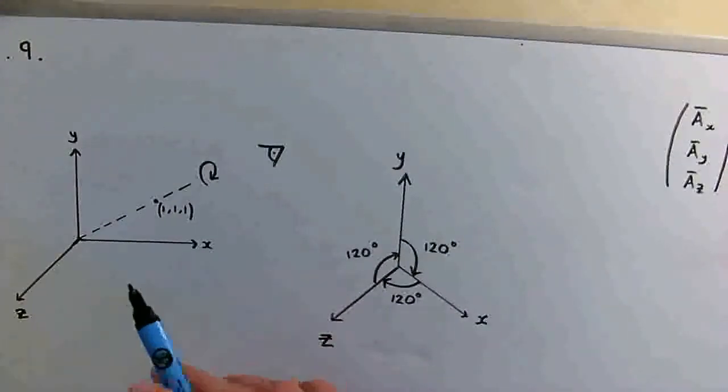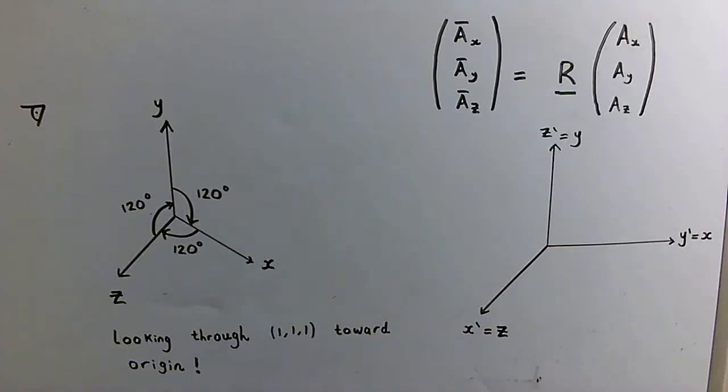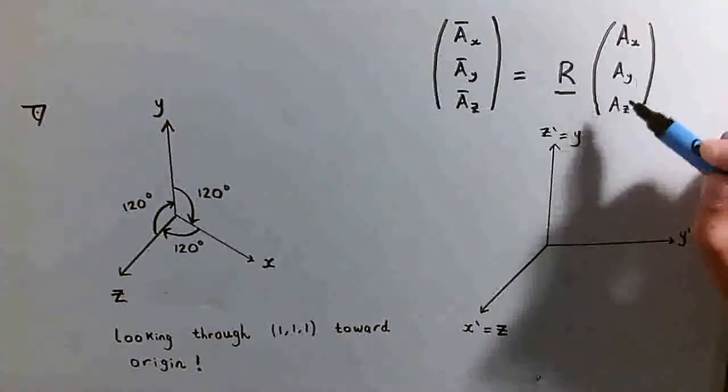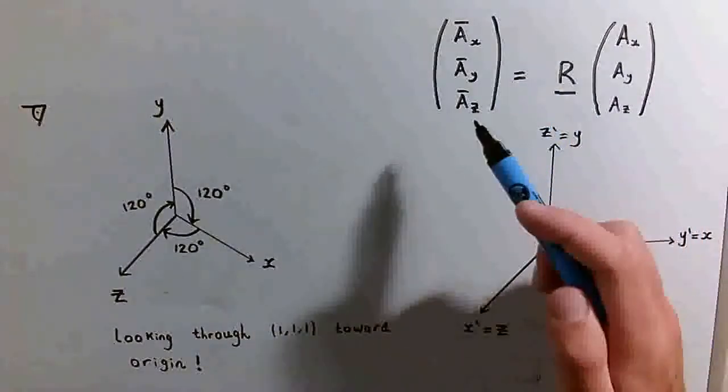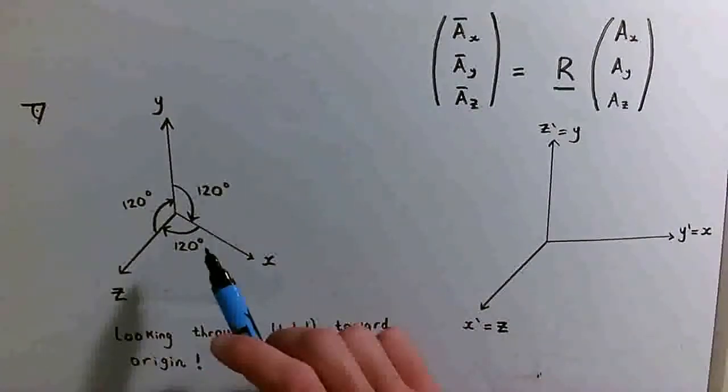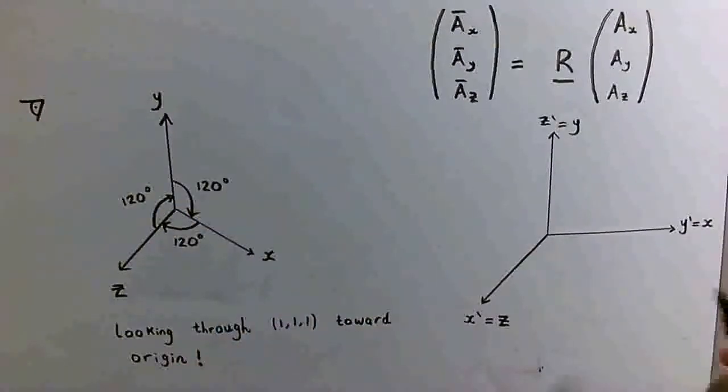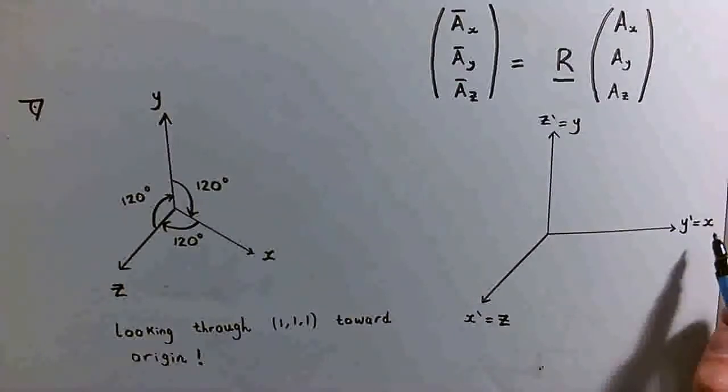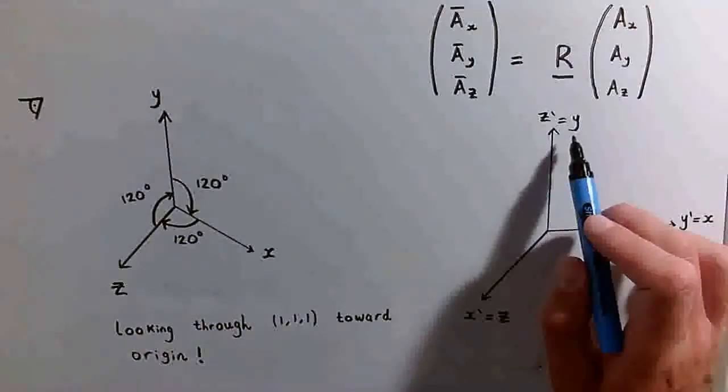Let's revisit this formula where we have a set of coordinates A_x, A_y, and A_z transformed onto a new set of coordinates A_x bar, A_y bar, and A_z bar. I've drawn another set of coordinate axes just to show this effect of the rotation. So the y axis is rotated onto the x axis, so this y prime is equal to the x axis. The modified y is now the x. In the same way, the modified x is now the z axis, and the modified z is now the y axis.